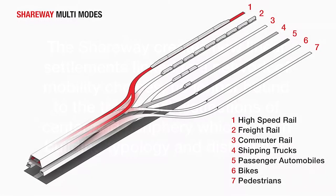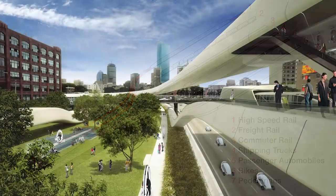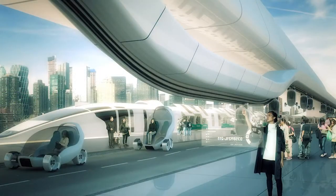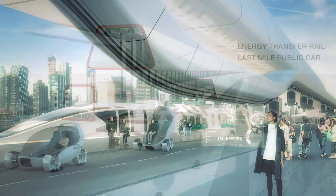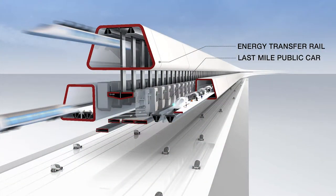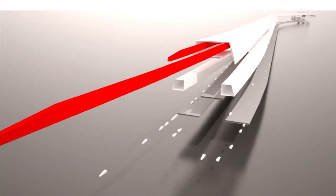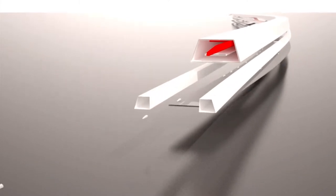A diagram shows seven transportation and shipping modes merging into a tight bundle of layered tunnels. The sleek, futuristic network is shown via architectural renderings. A schematic rendering identifies an energy transfer rail and small vehicles called last-mile public cars. The network's functionality is demonstrated via a computer animation.